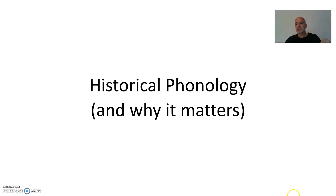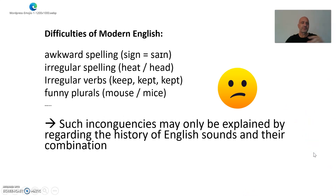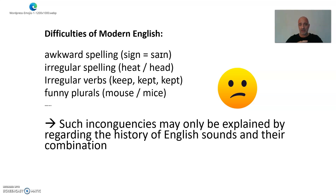And historical phonology will explain that. So what is so awful about it? Let's have a look. Look at some of these difficulties — randomly chosen. Take the word 'sign'. When I first saw it as a young kid, I pronounced it 'sigg-n'. Of course I did. If you don't know, no chance you can figure it out. Irregular spellings, things like that.